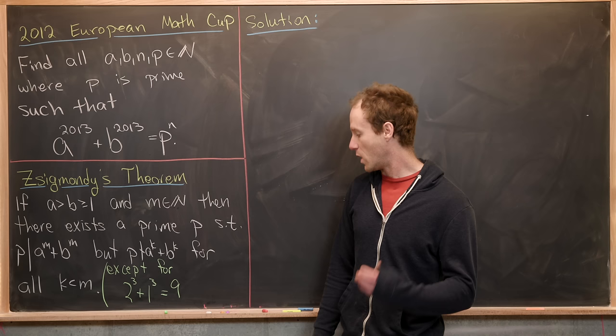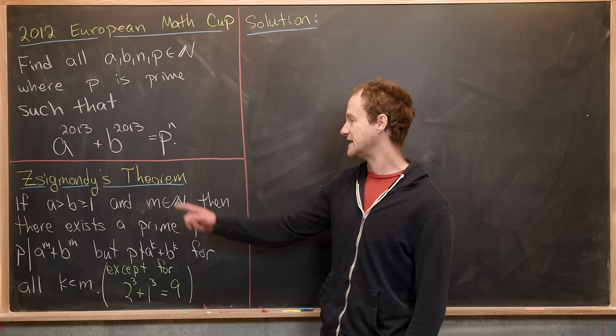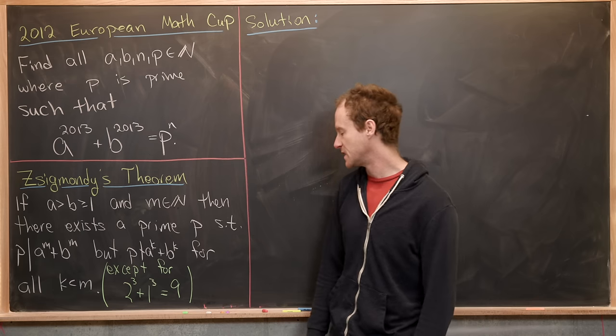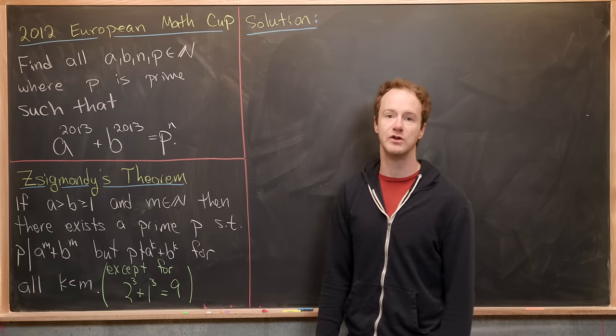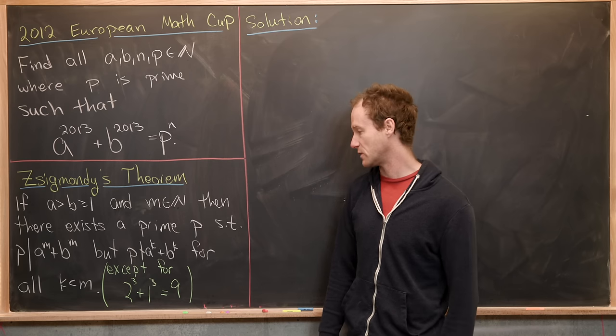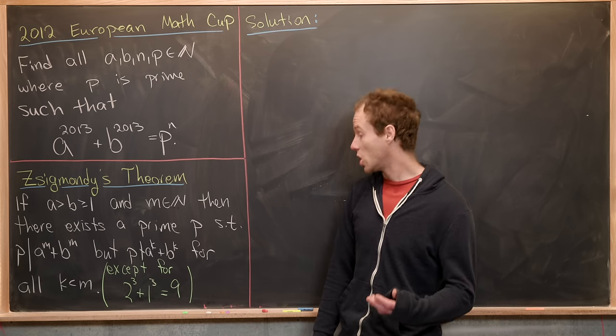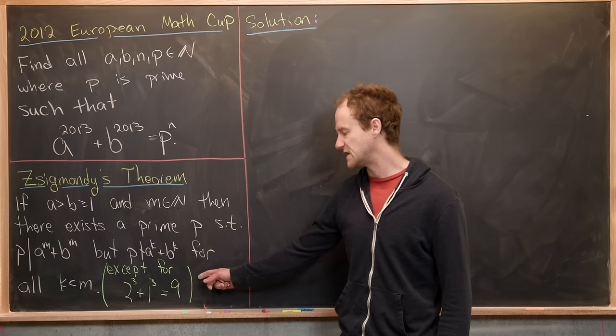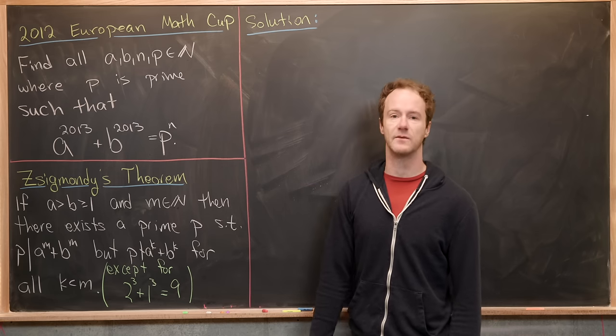And there's actually one exception to this theorem, and that's the case when A and B are 2 and 1 and M is equal to 3. So notice 2 cubed plus 1 cubed is equal to 9, which is a multiple of 3. But also 2 plus 1 is equal to 3, which is also a multiple of 3. So this is the only case when this theorem fails.